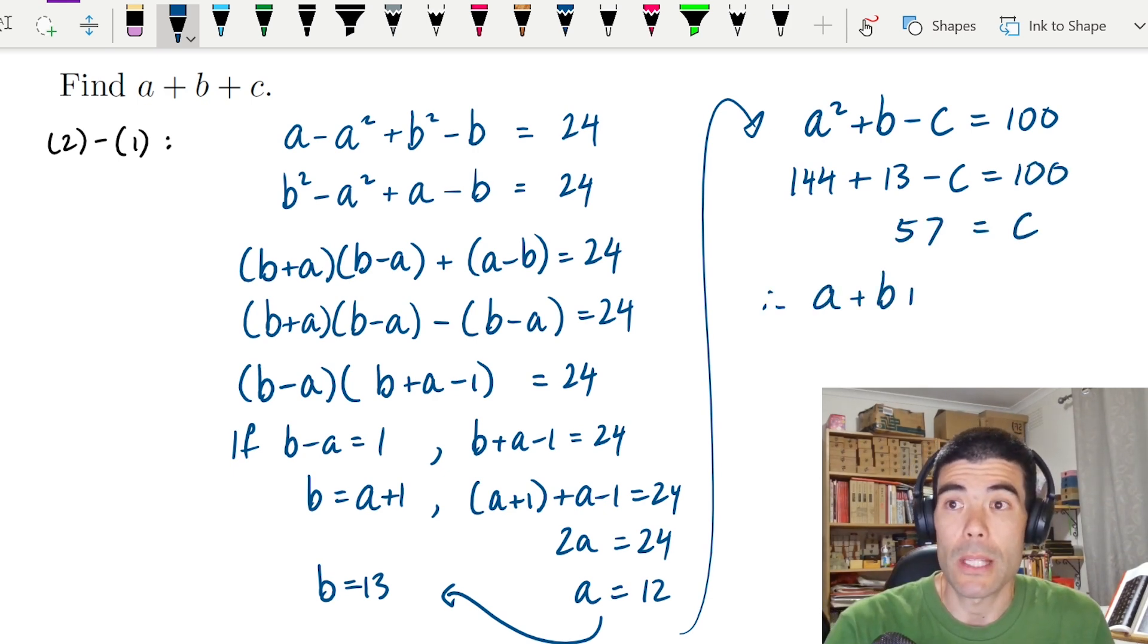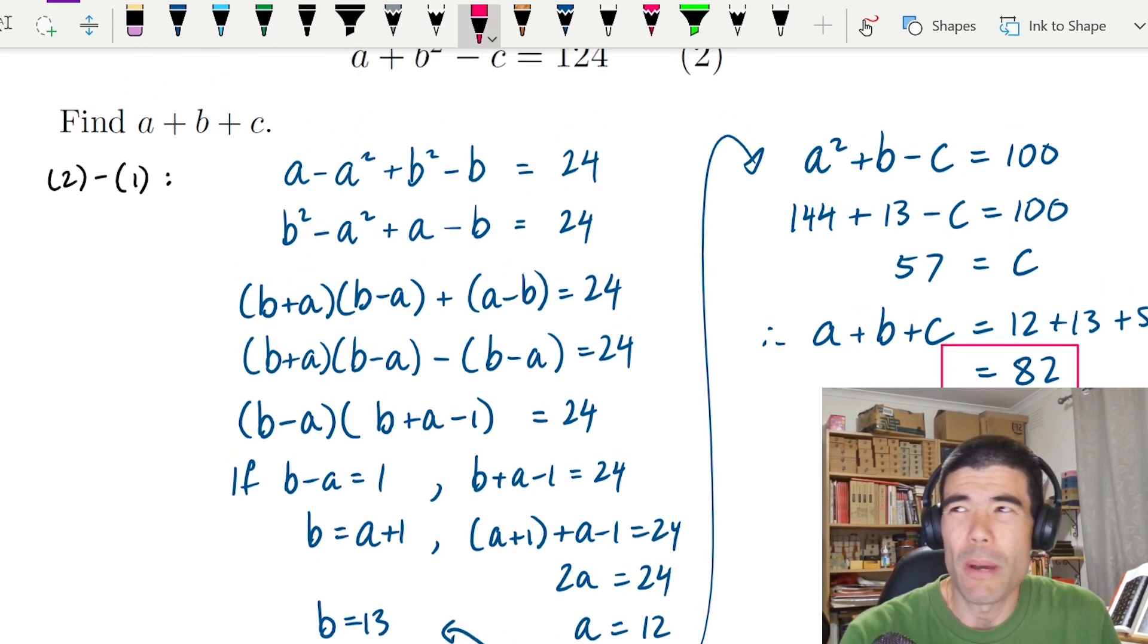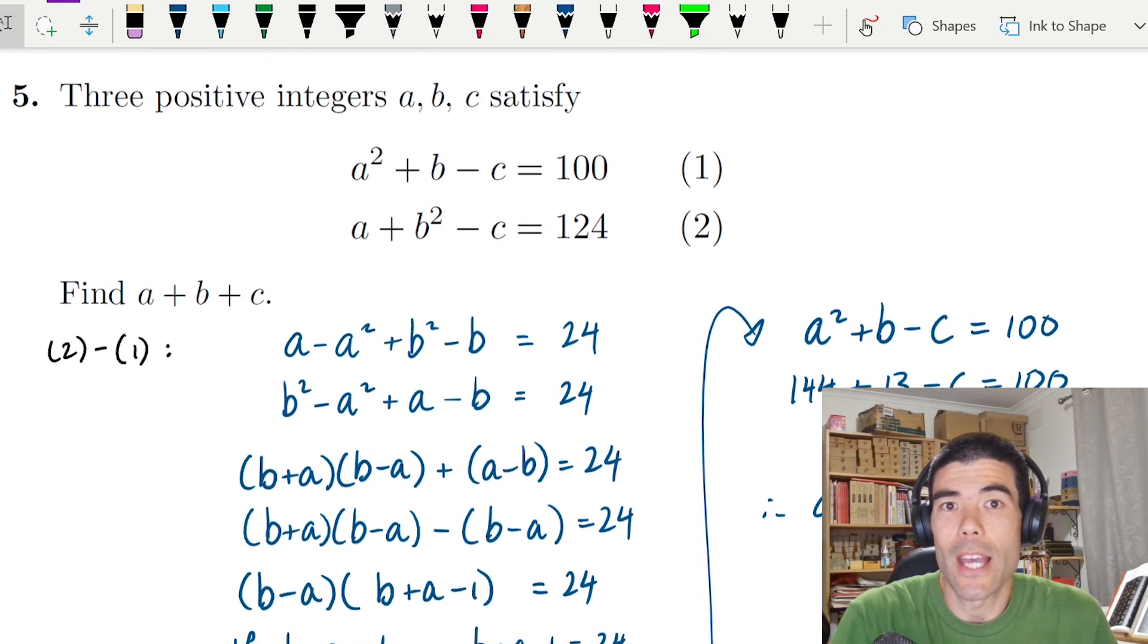In this case, a plus b plus c will be 12 plus 13 plus 57, which would be 82. So given that we have found positive integers a, b, and c that satisfy the equations and a plus b plus c is 82, by the way the question is worded, that must be the answer to our question.